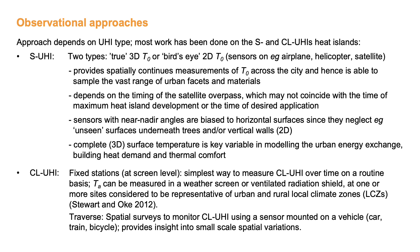In my final section, I will briefly talk about ways to measure different heat island types, concentrating on those types which have more applied value when considering heat mitigation or outdoor thermal comfort. With respect to the surface heat island, there are two main types: one based on the true 3D surface temperature and another based on the more common bird's eye 2D surface temperature using sensors mounted on, for example, an airplane, helicopter or satellite. Generally, the surface heat island provides spatially continuous measurements of surface temperature across the city, but it depends on the timing of the satellite overpass, which may not coincide with the time of maximum heat development or the time of desired application. Sensors with near nadir angles are biased to horizontal surfaces since they neglect unseen surfaces underneath trees and vertical walls — this is the typical 2D view.